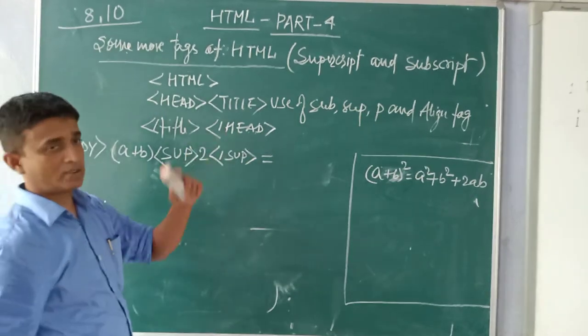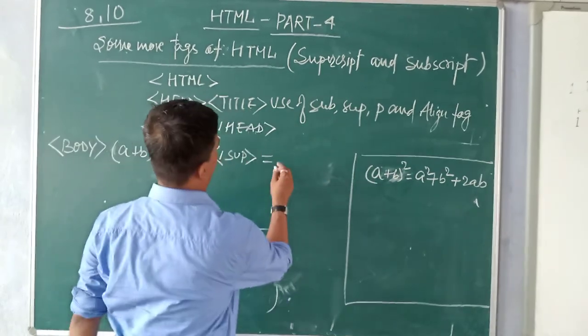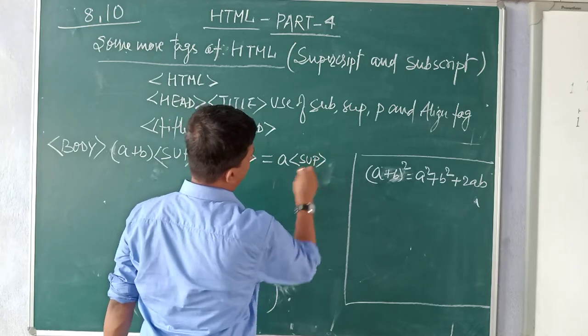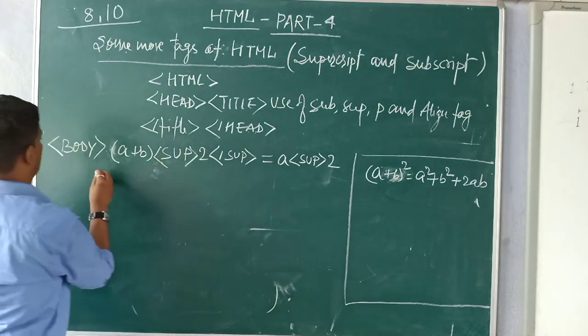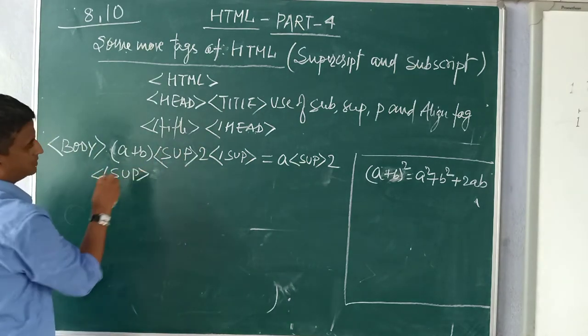This part is over. Now let's see - put here equal sign. Now a square. After equal what do you want to get? a square super. Then 2 and you will close this super.